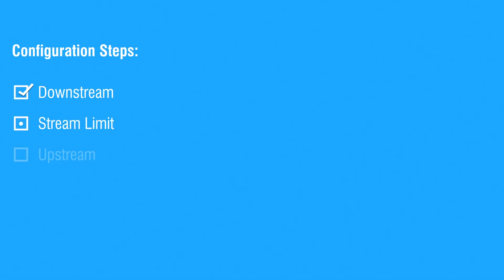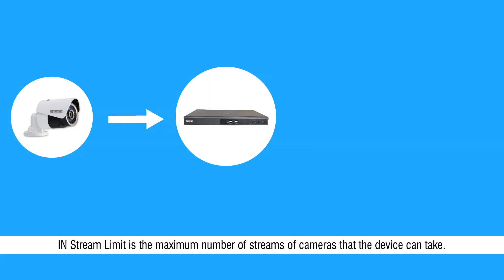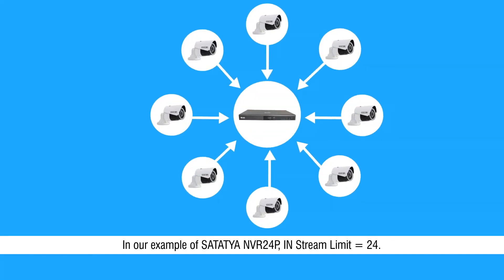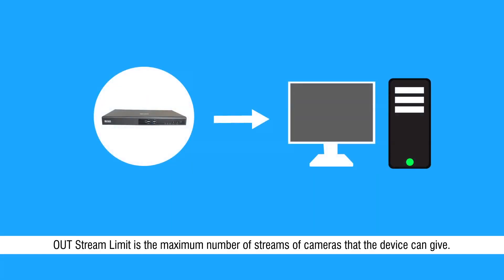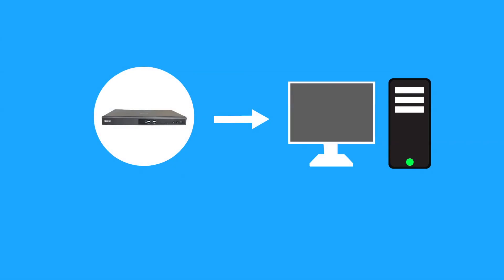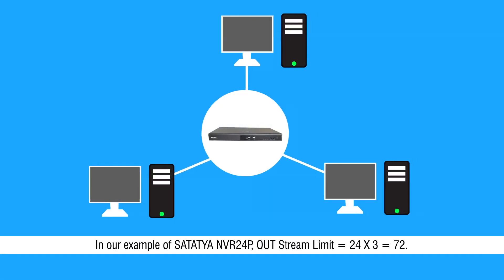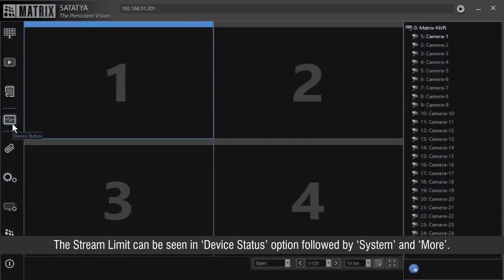Stream limit is the limit of the Satathya device to take in or give out the stream of cameras. In-stream limit is the maximum number of streams of cameras that the device can take — it is equal to the total number of cameras that the device supports. In our example of Satathya NVR-24P, in-stream limit is 24. Out-stream limit is the maximum number of streams of cameras that the device can give — it is equal to 3 times the total number of cameras that the device supports. In our example, out-stream limit is 24 × 3, that is 72. The stream limit can be seen in the device status option followed by system and more.